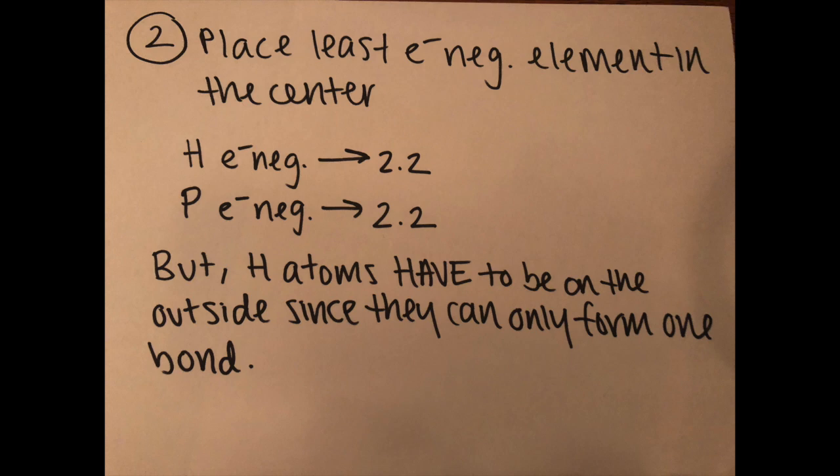And so step two place the least electronegative element in the center. I have written the two electronegativity values for hydrogen and phosphorus here but once again because hydrogen only has one atom it has to be on the outside and it cannot be a central atom.